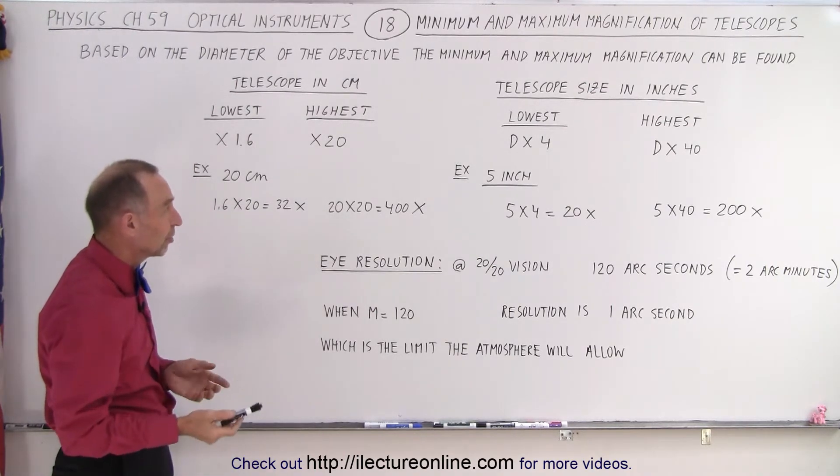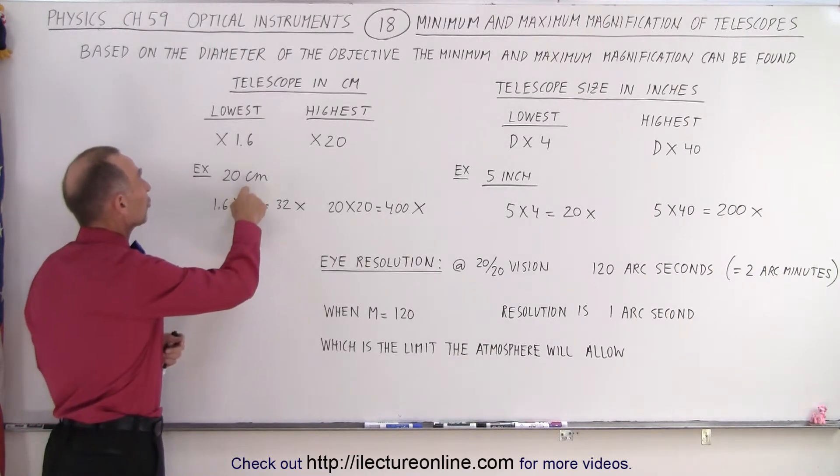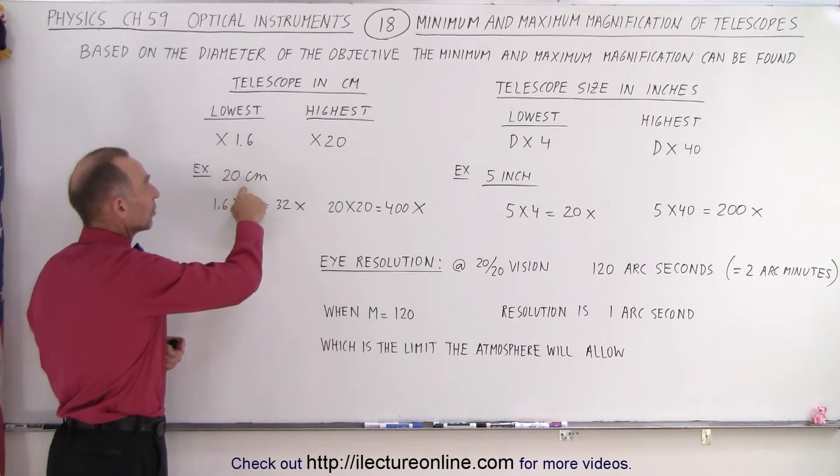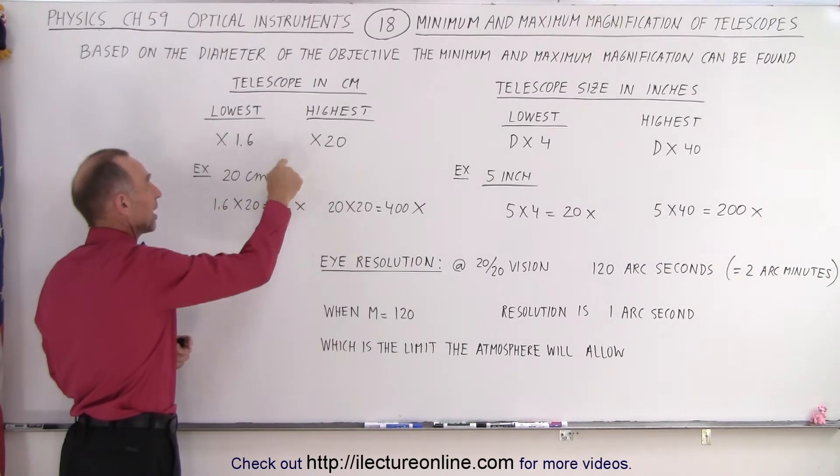If we want to use this in centimeters, let's say you have a 20 centimeter telescope, for the lowest setting it's 1.6 times the diameter in centimeters, for the highest is 20 times the diameter in centimeters.